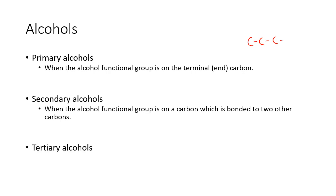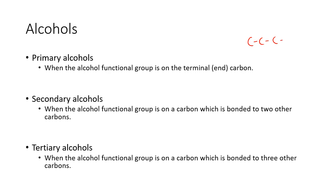A tertiary alcohol is when the alcohol functional group is on a carbon which is bonded to three other carbons. So if you want it here, you're going to have to add a couple of extra carbons. Now this carbon — the one attached to the alcohol group — is bonded to one, two, three other carbons. That's a tertiary alcohol.